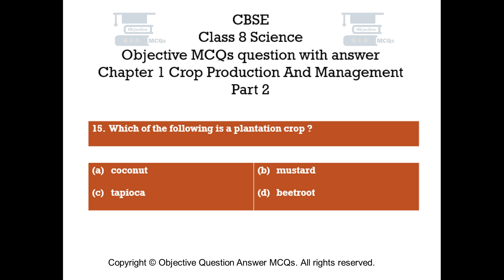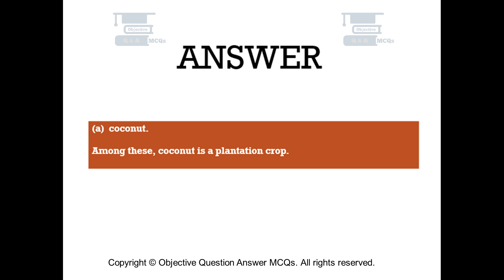Question number 15. Which of the following is a plantation crop? Option A: Coconut. Option B: Mustard. Option C: Tapioca. Option D: Beetroot. The right answer is Option A, Coconut. Among these, coconut is a plantation crop.